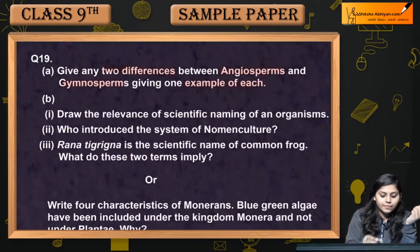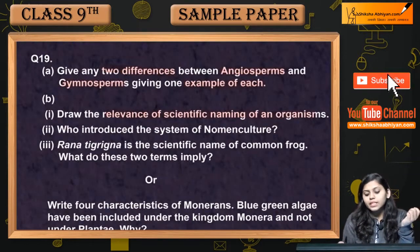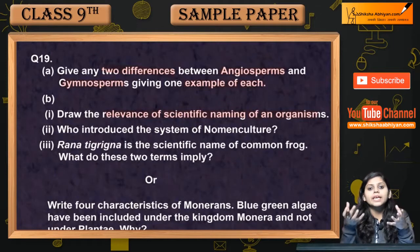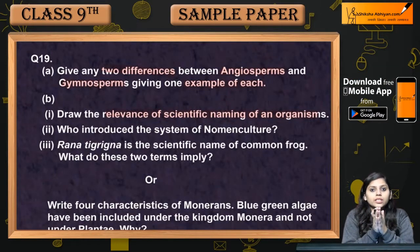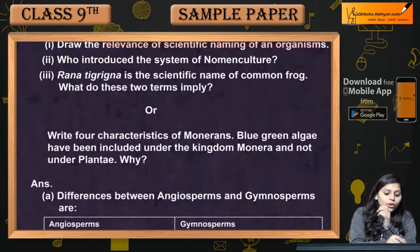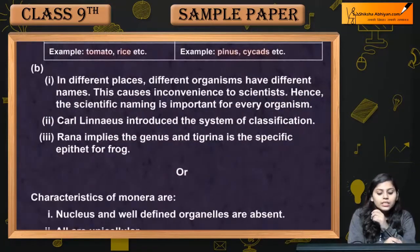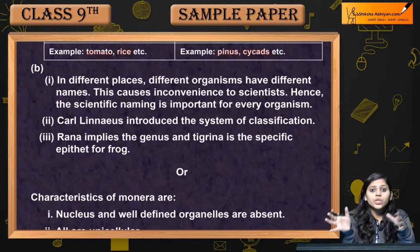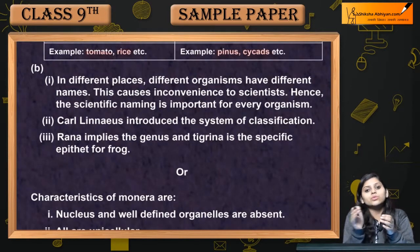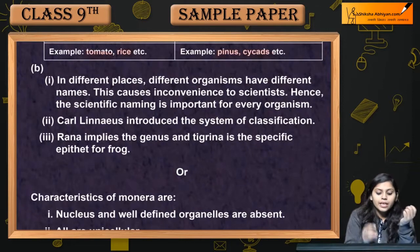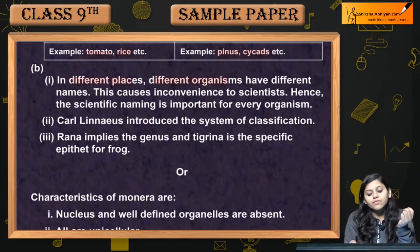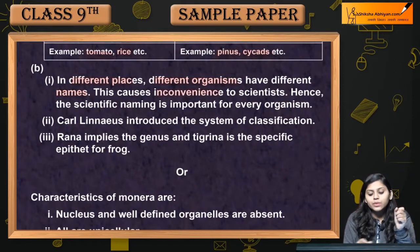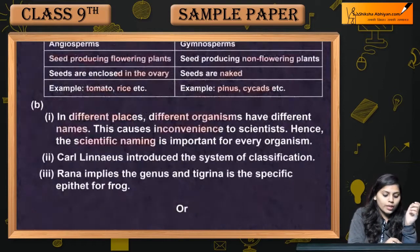Next question: explain the relevance of scientific naming of an organism. Why can't any organism just use a common name? Because one organism can have different native names in different places. Hence, scientific naming is important for an organism to have a universally recognized identity.